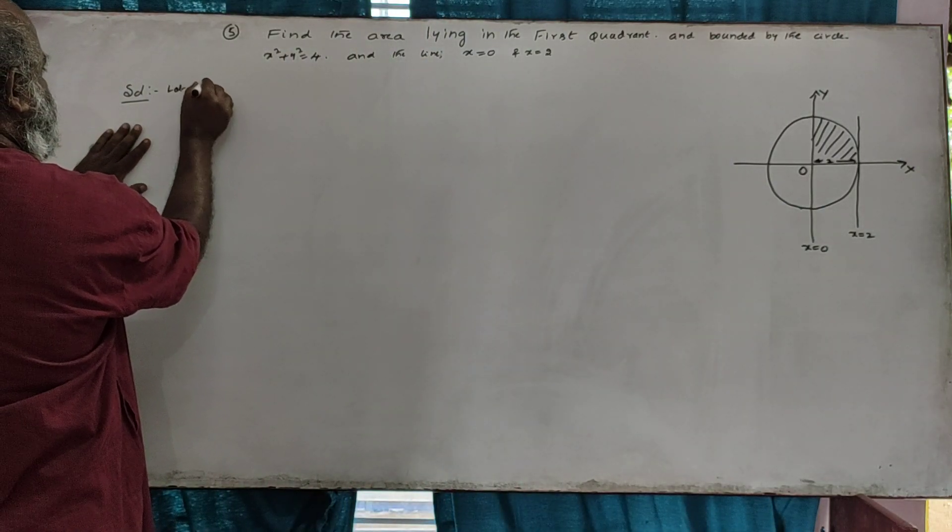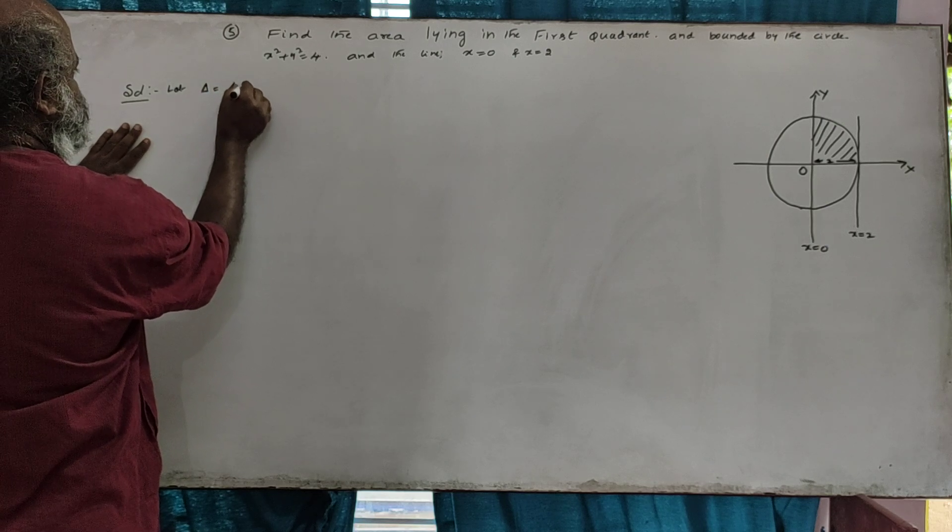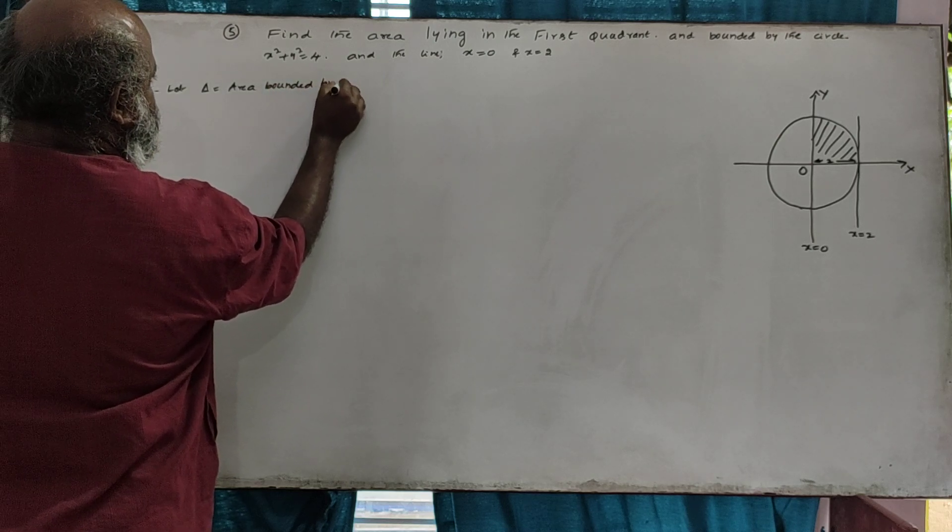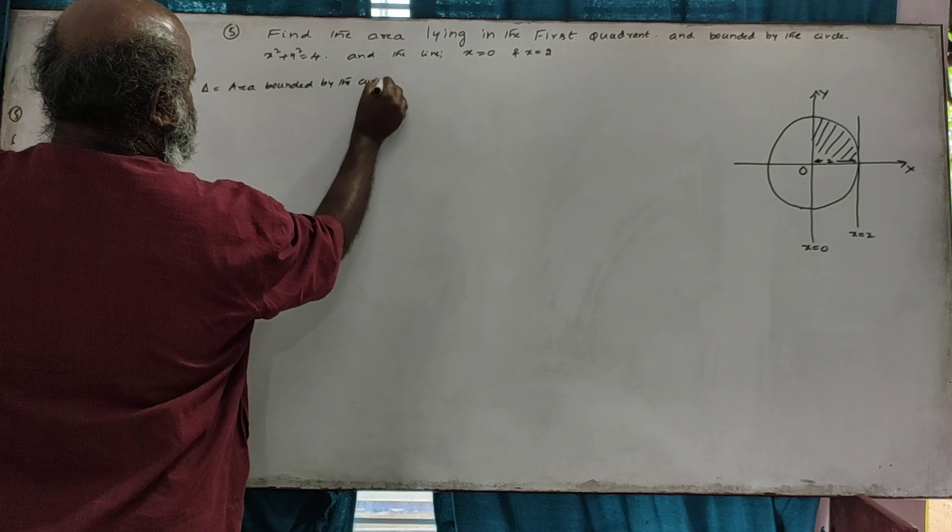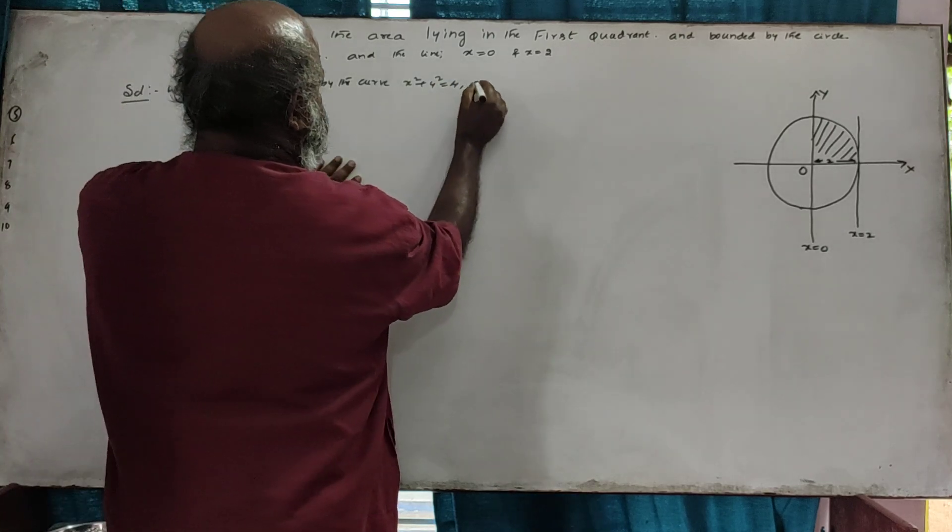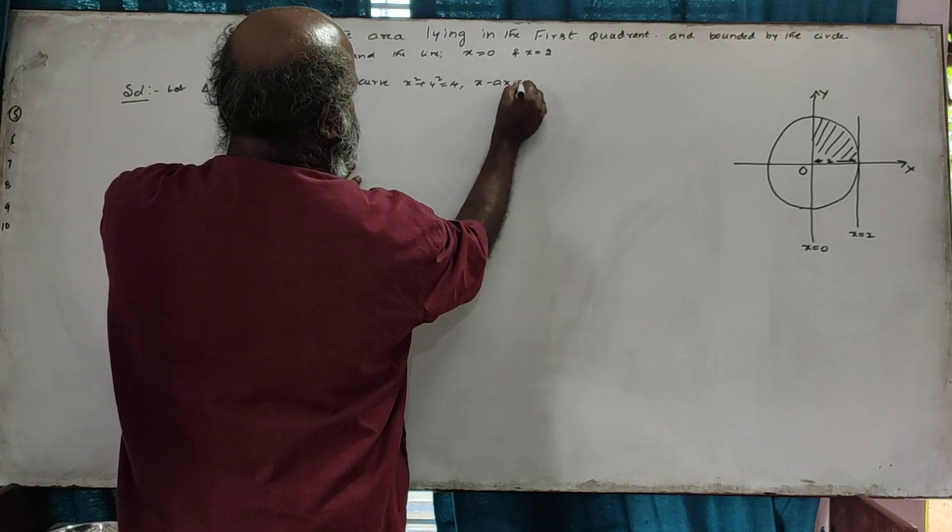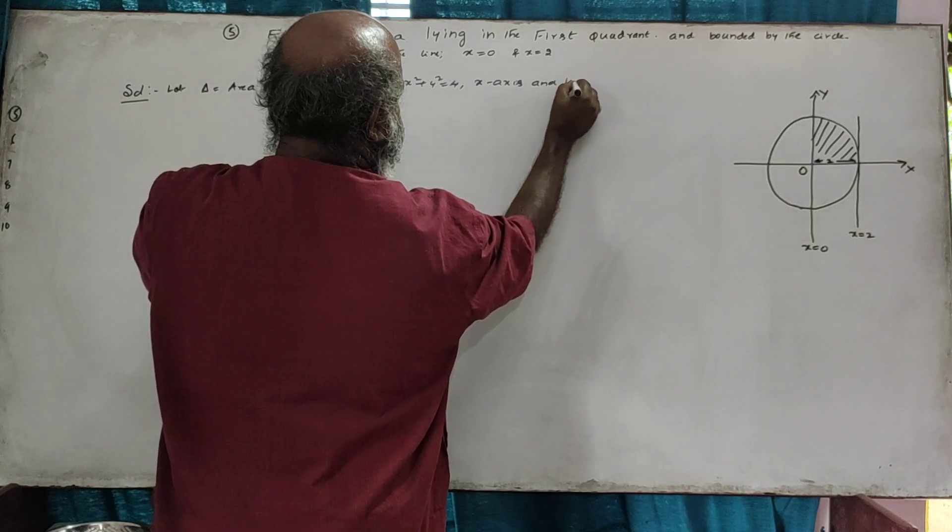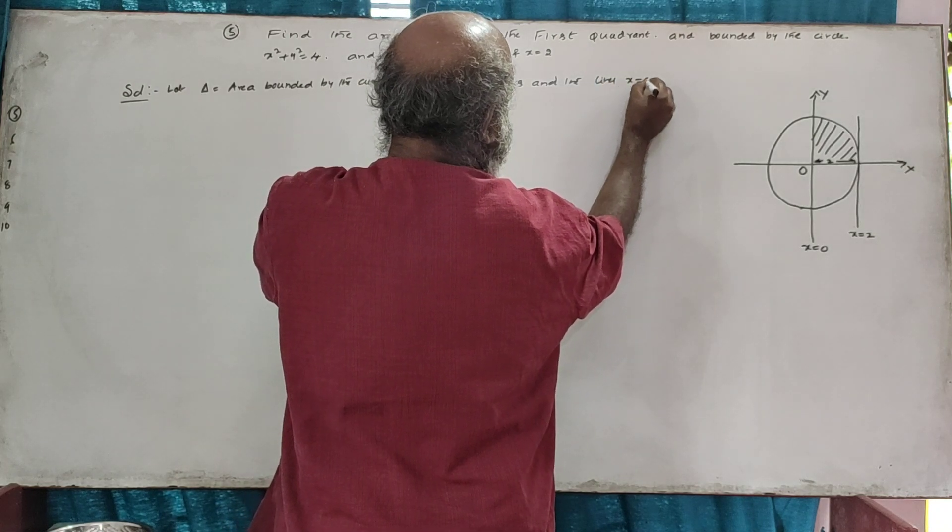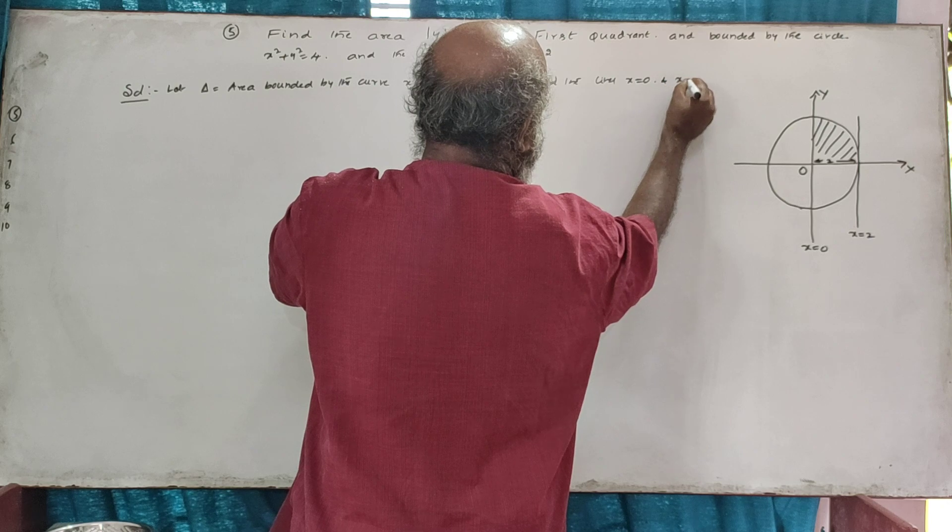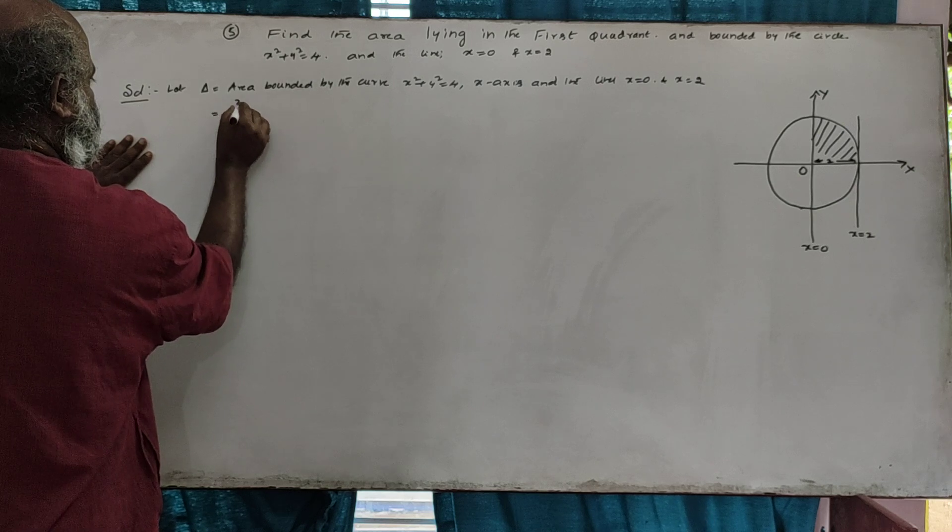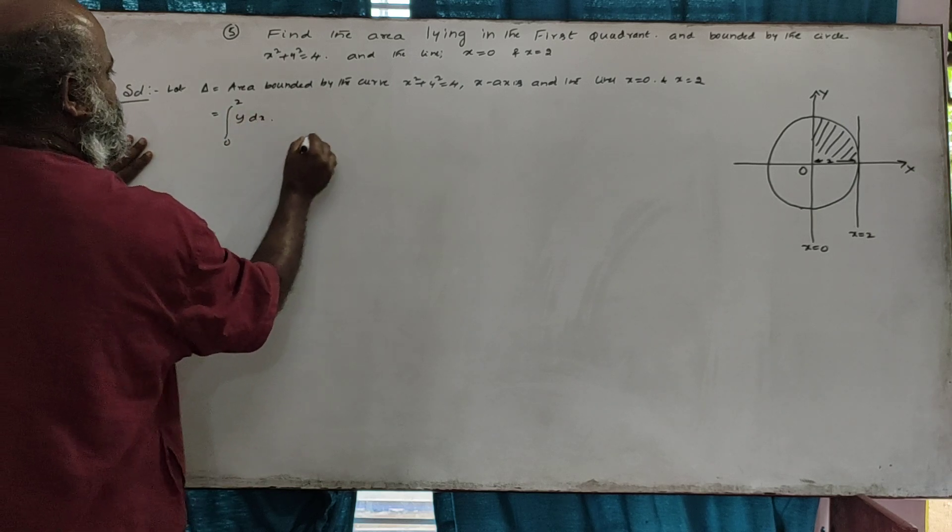Let us find the area bounded by the curve x squared plus y squared equals 4, the x-axis, and the lines x equals 0 and x equals 2. This is the integral from 0 to 2 of y dx.